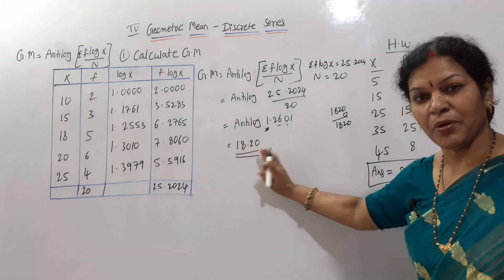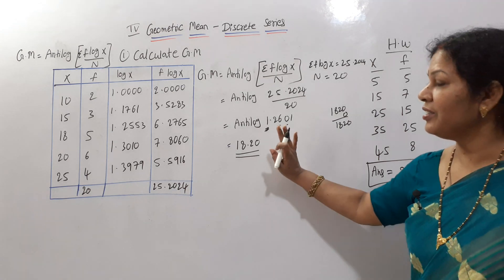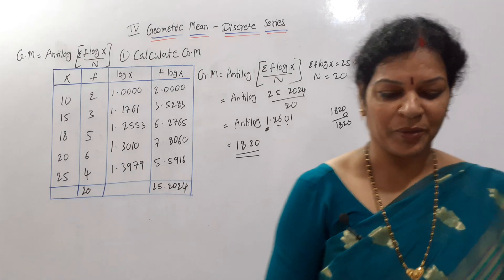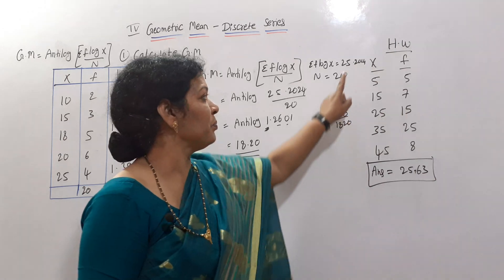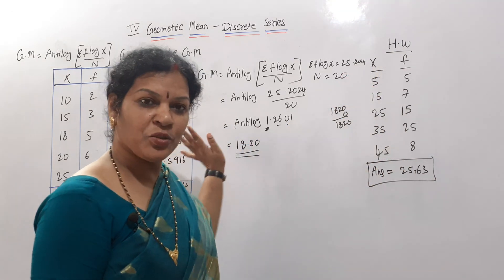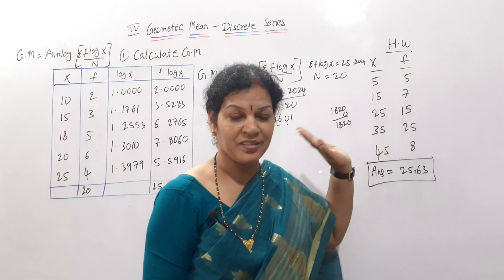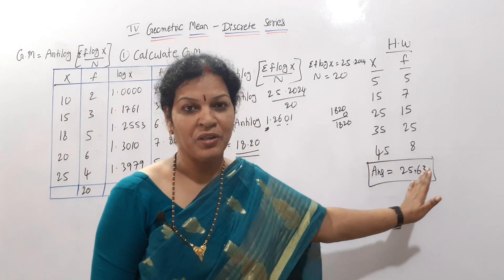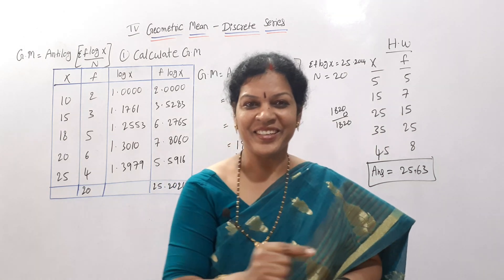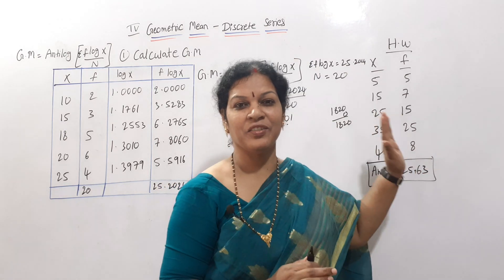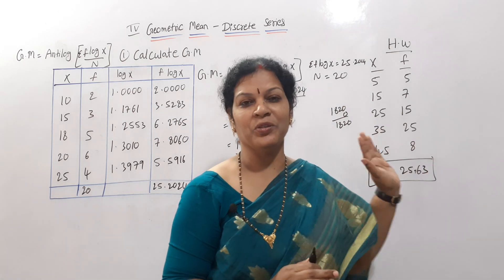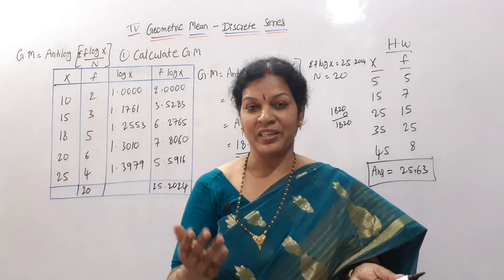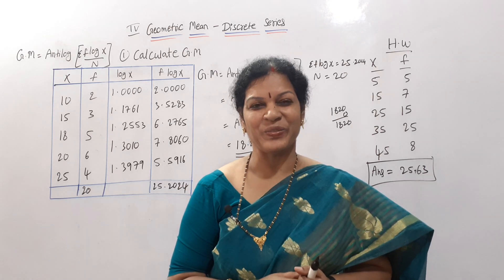So the answer is 18.20. Now try to work out the same problem without looking at the board — if correct, try the homework problem. x and frequency are given; follow the same steps: log x, then f × log x, then apply the formula. Your final answer should be 25.63. Write in the comment box if you get it. In the next class we'll see geometric mean for continuous series — practice well, good luck!